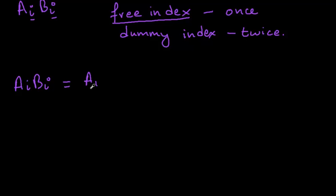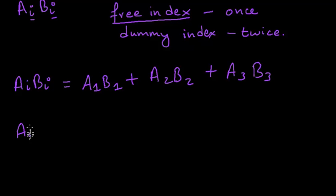Since it does appear twice, this means that it should be summed over all those indexes: a_1 b_1 plus a_2 b_2 and a_3 b_3.